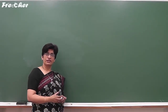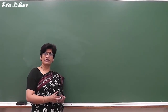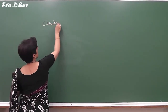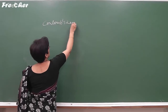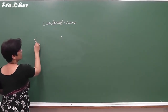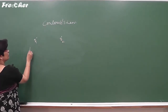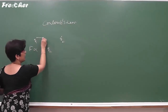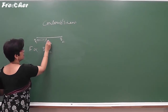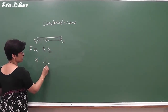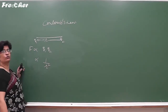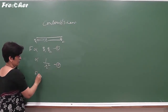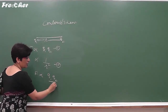The force between two point charges is given by Coulomb's law. It states that if we have two point charges Q1 and Q2, then the force between them is directly proportional to the product of the two charges. If R is the distance between the two charges, then the force F is inversely proportional to the square of that distance. Combining these two, we get F proportional to Q1·Q2 upon R².